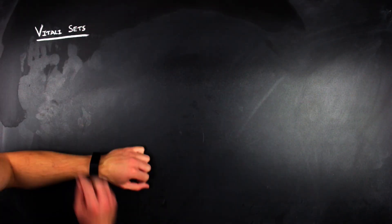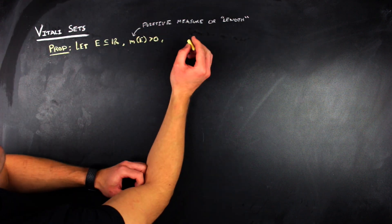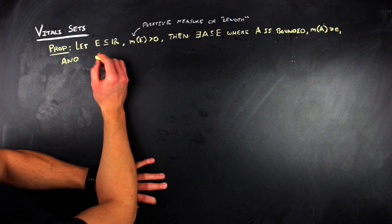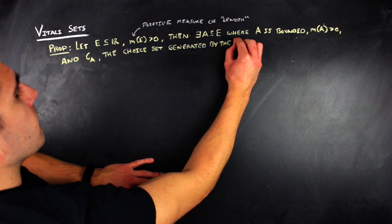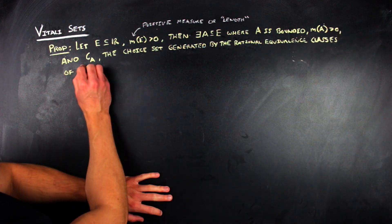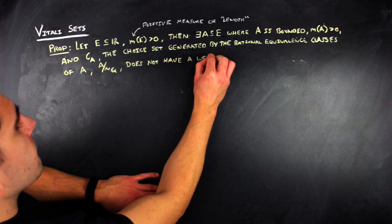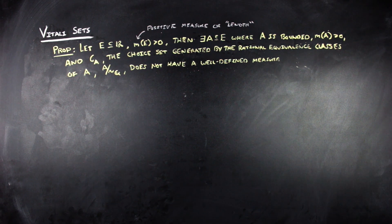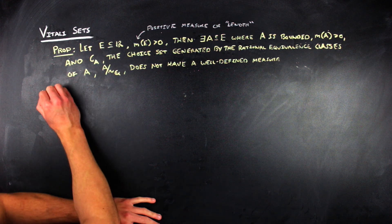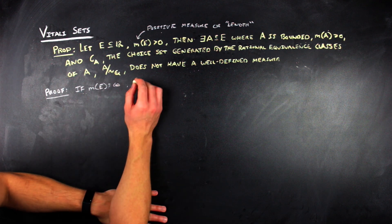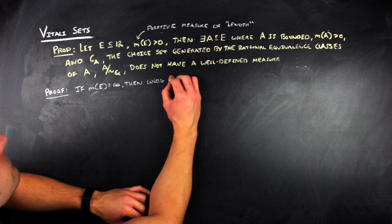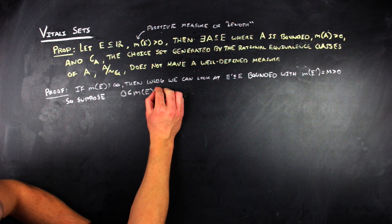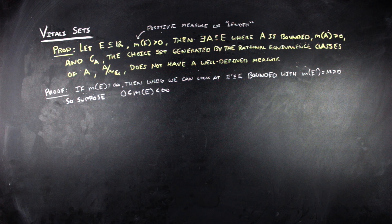The claim we want to show is: if you have some set e of positive measure, then there exists a subset a of e that also has positive measure, is bounded, and when you look at the choice set C_a generated by the rational equivalence relation on a, that C_a does not have a well-defined notion of measure. To start, if e has infinite measure we can look at a bounded subset with finite nonzero measure, so without loss of generality we consider a bounded set e with finite nonzero measure.